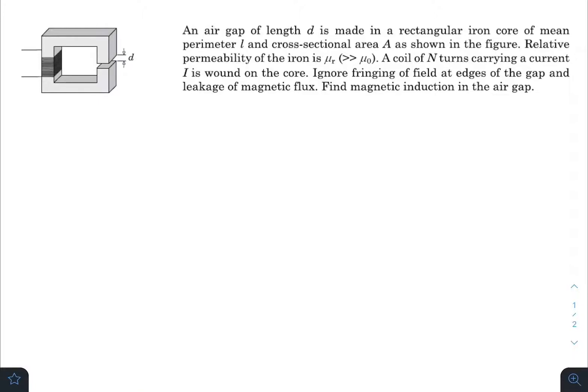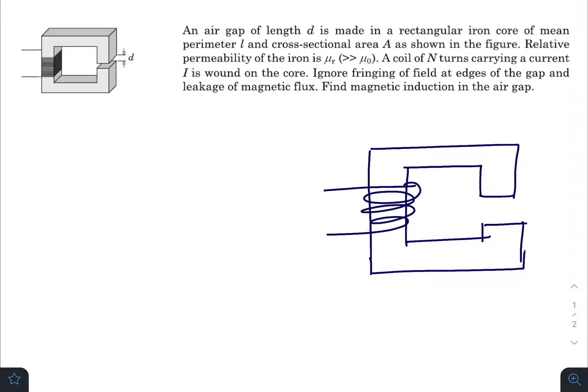So let me draw the diagram, side view of the diagram. It is something like this, the turns are here and this one is d. The whole length is l, I mean this whole length of the perimeter is l. So let me draw an Ampere's loop like this.